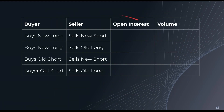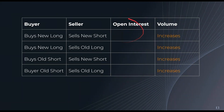Now let's look at what happens to open interest and volume in every possible transaction. Volume is very easy — every time a transaction happens, it increases. Open interest is where people often get confused. In the first case, a buyer buys a new long and a seller sells a new short. A new contract has been created and both participants are new to the market, so open interest increases alongside volume.